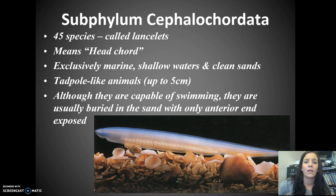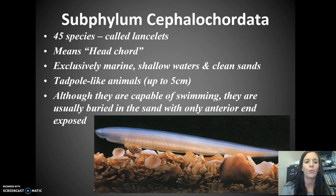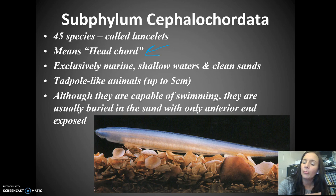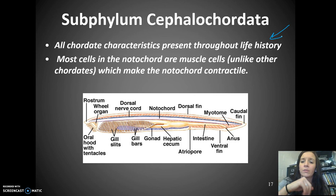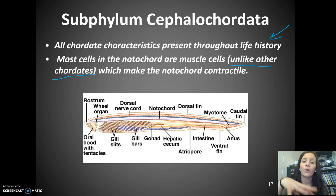The other subphylum is Cephalochordata — there are 45 species called lancelets. The name means 'headcord.' They are exclusively marine, prefer shallow waters and clean sands, and are tadpole-like animals only up to 5 centimeters. Although capable of swimming, they're usually buried in the sand with their anterior end exposed. They have all five chordate characteristics throughout their life history. Most cells in the notochord are muscle cells — making their notochord a contractile muscle, which is unlike other chordates.